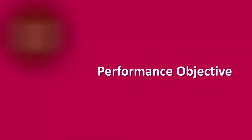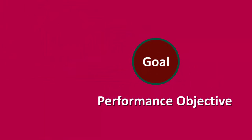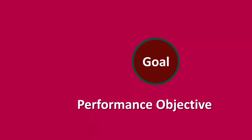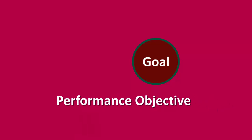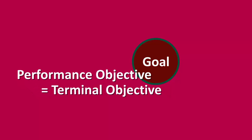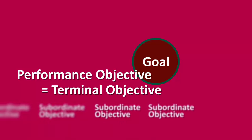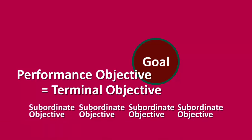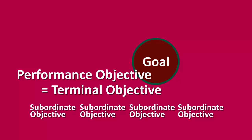Taking a goal and making it clear and precise can be thought of as a conversion of sorts. When an instructional goal is converted to a performance objective, it is often referred to as a terminal objective. Objectives used along the way to a terminal objective are referred to as subordinate objectives.